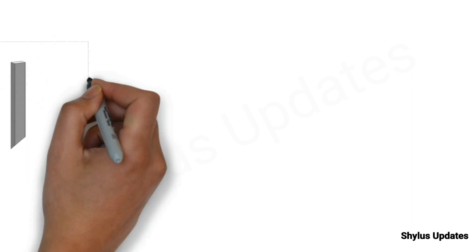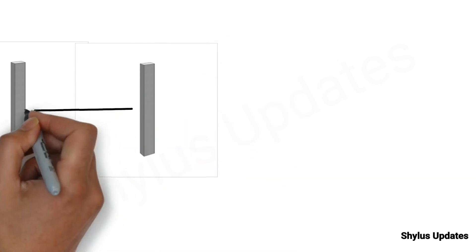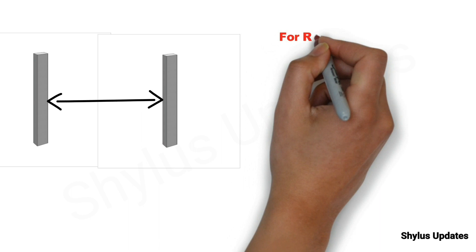Columns are compression members of a building structure and play an important role in transferring load from superstructure to substructure.